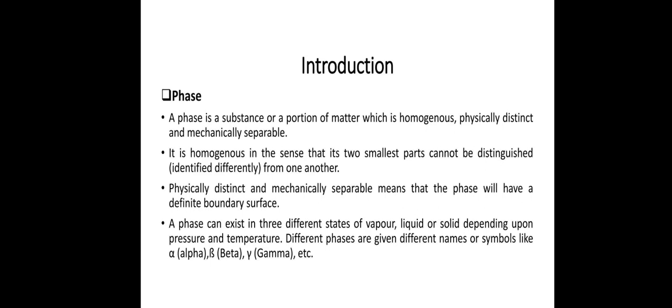A phase can exist in three different states of vapor, liquid or solid depending upon pressure and temperature. Different phases are given different names or symbols like alpha, beta, gamma, etc.